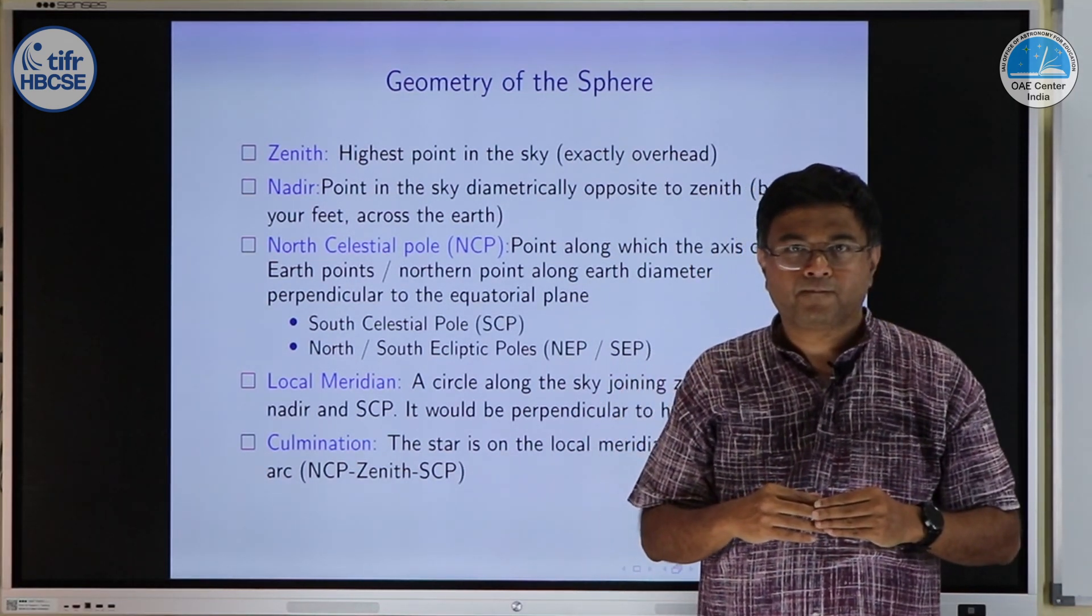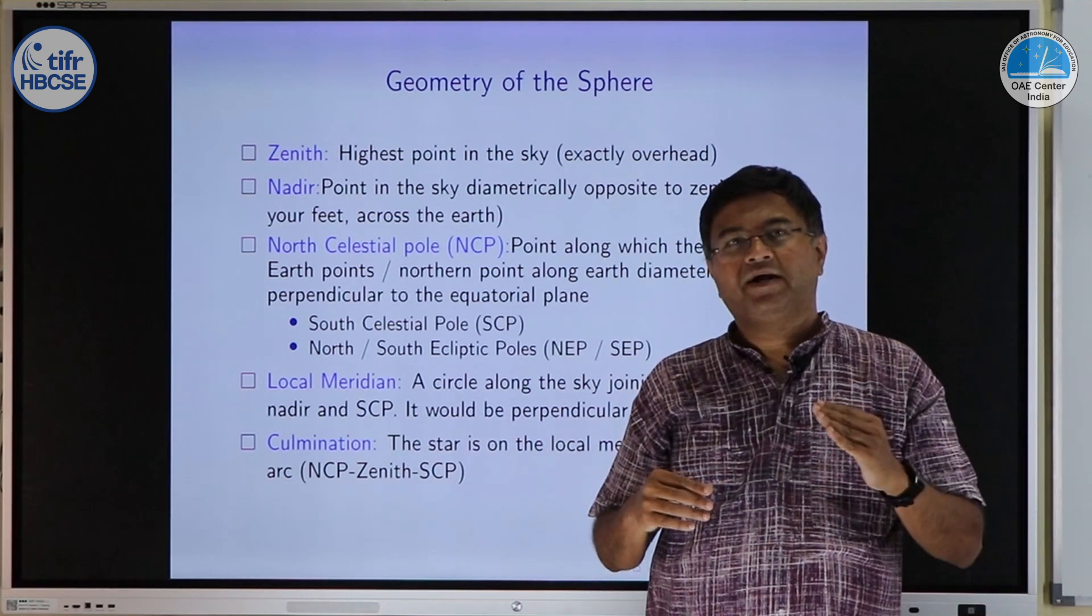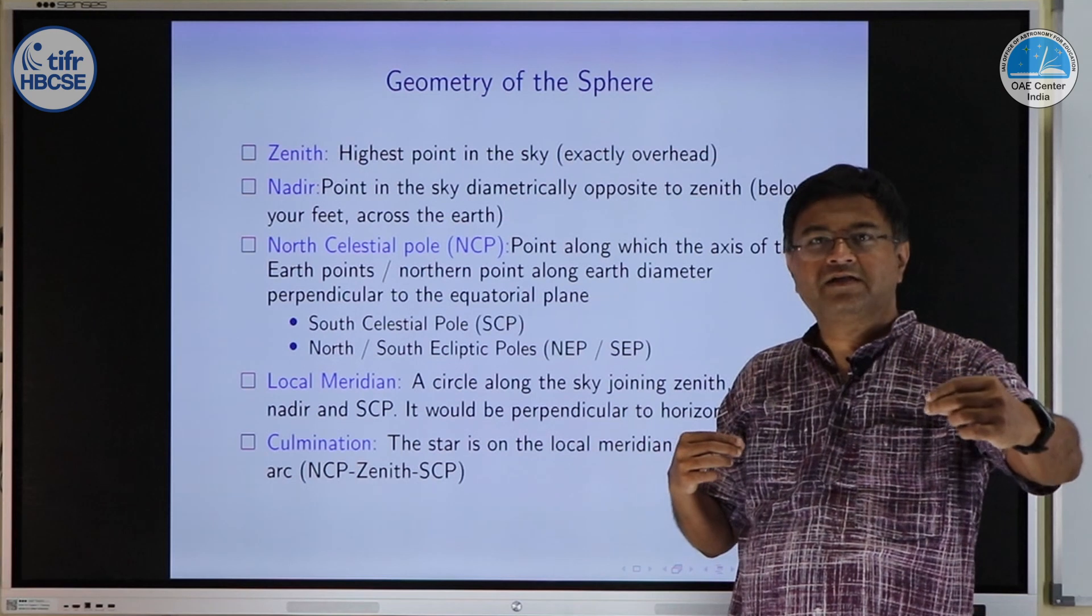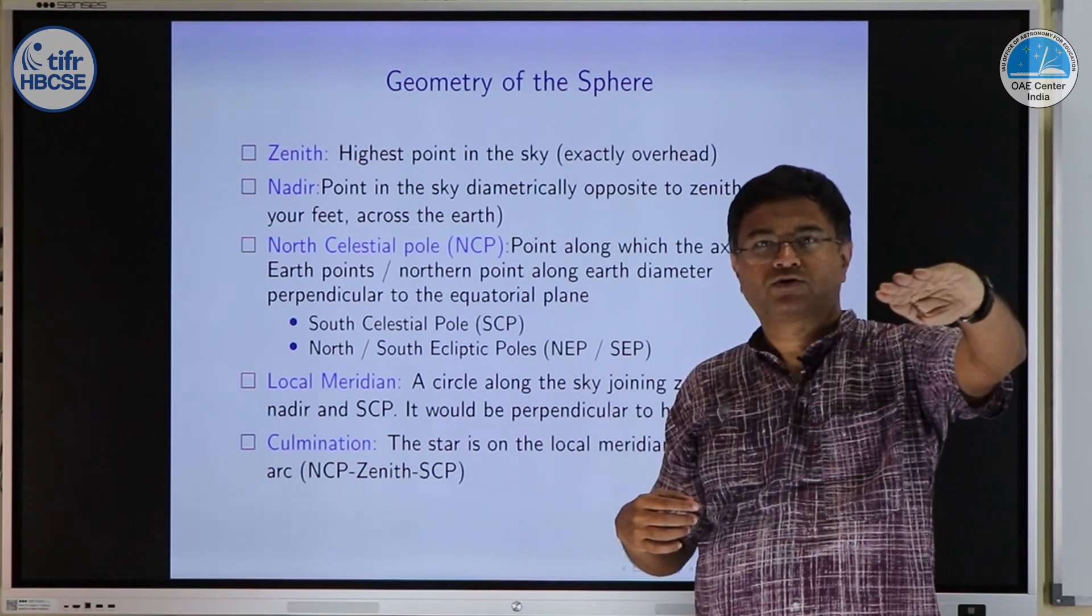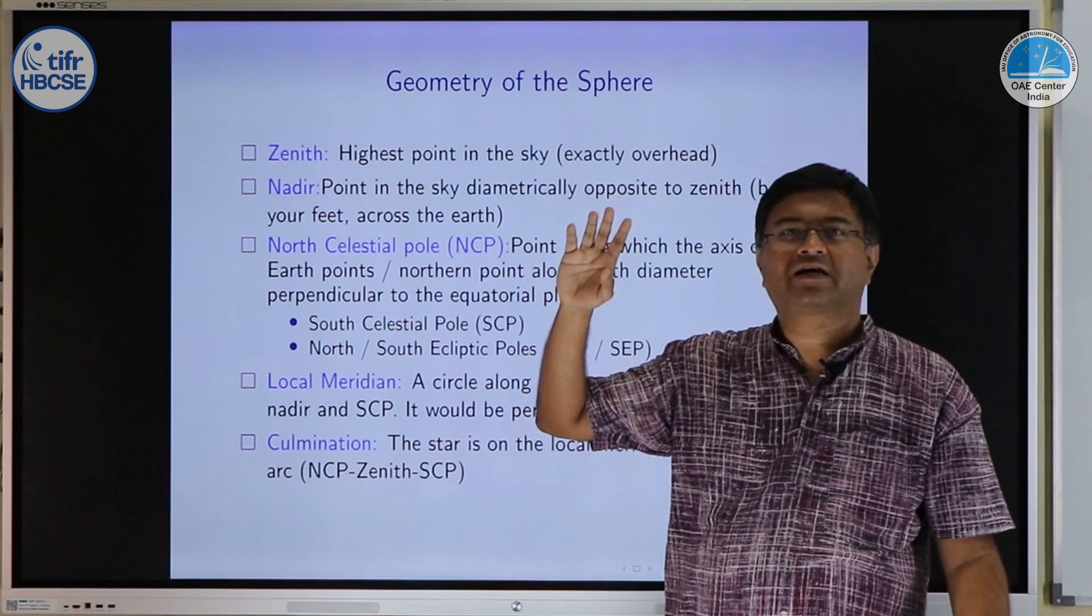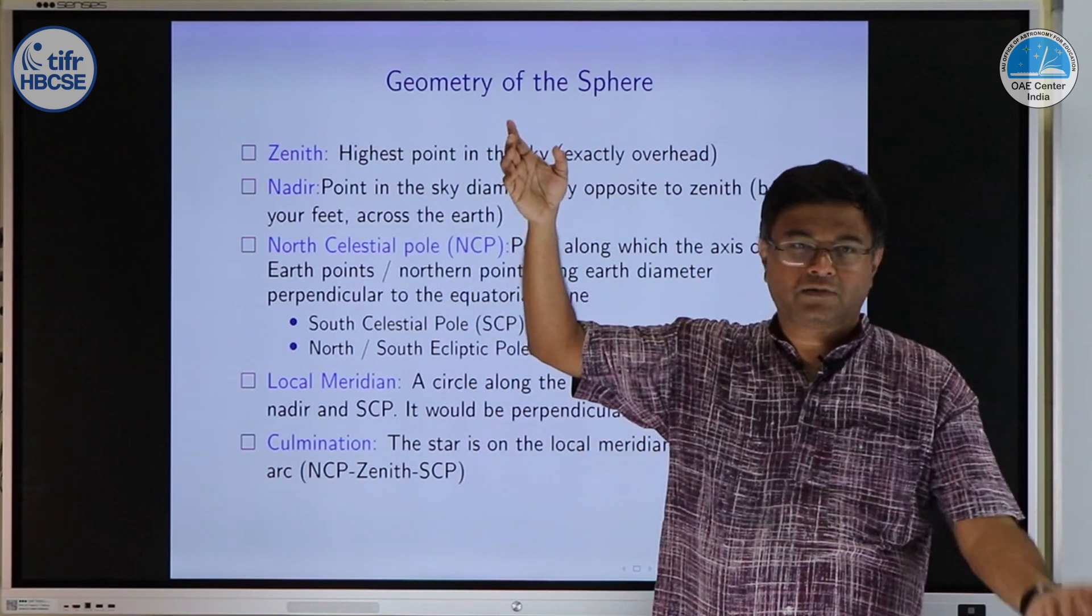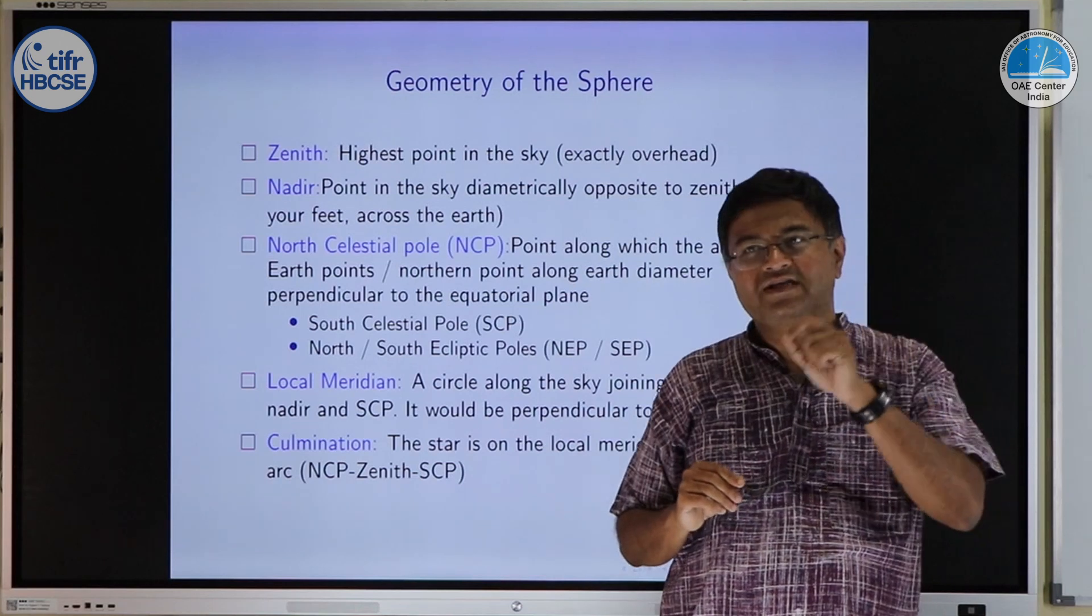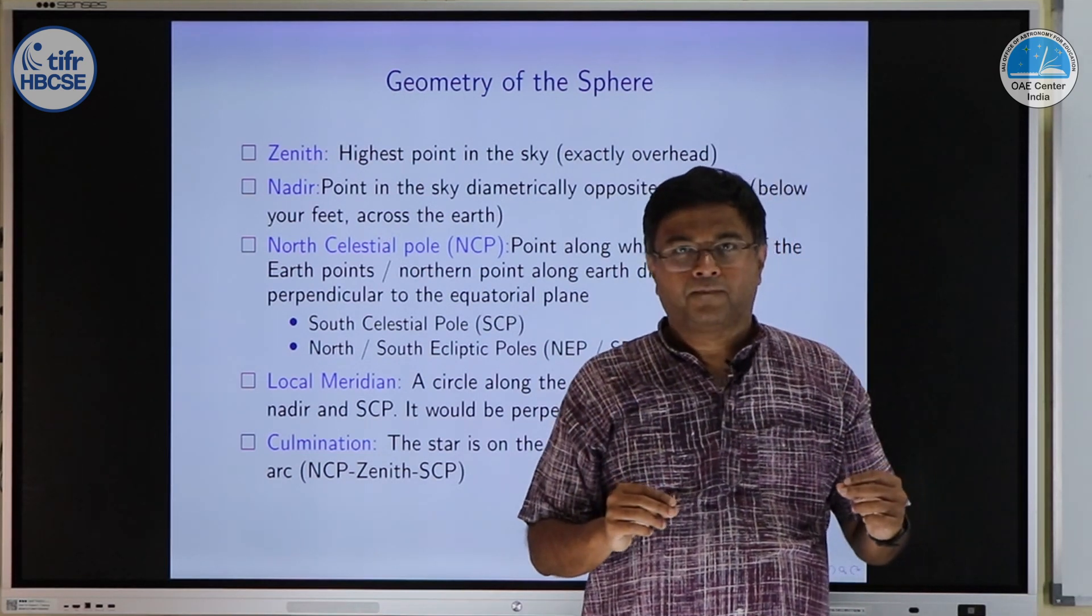Then we define something called culmination. Culmination is the instance when the star crosses the local meridian in the upper arc. We can define meridian as full circle. We can divide in two parts. The cut will be along the north celestial pole and south celestial pole. One side of the arc will include zenith. Other side semicircle will include nadir. I will take the path which includes zenith as the upper arc and path which includes nadir as the lower arc. So when a star crosses meridian in the upper arc, we say that it is culminating for that observer.